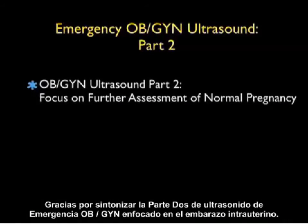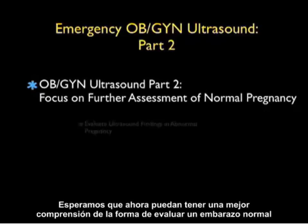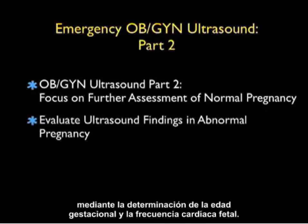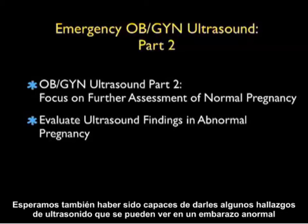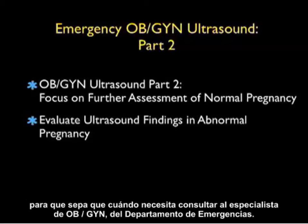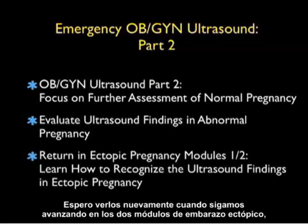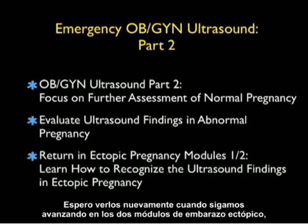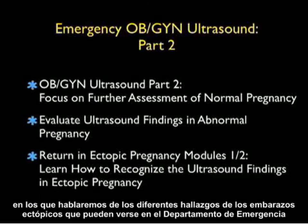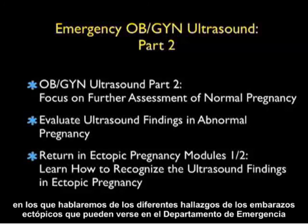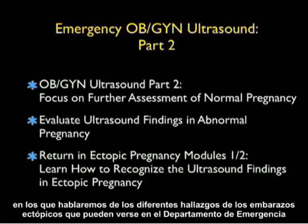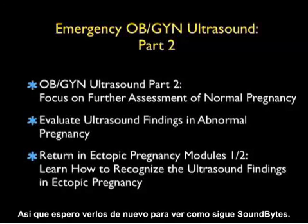Thanks for tuning in to Part 2 of Emergency OB-GYN Ultrasound focusing on intrauterine pregnancy. Hopefully you now have a better understanding of how to further assess a normal pregnancy by determining gestational age and fetal heart rate, as well as the ultrasound findings of an abnormal pregnancy to know when you need an OB-GYN consultation in the ED. I hope to see you back as we move on to ectopic pregnancy in two modules discussing the various findings we may see in the emergency department. SoundBytes continues.